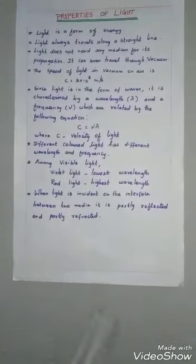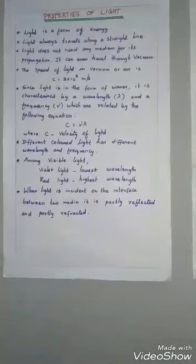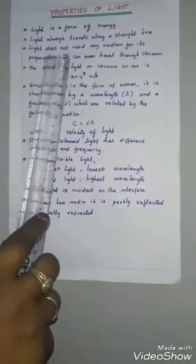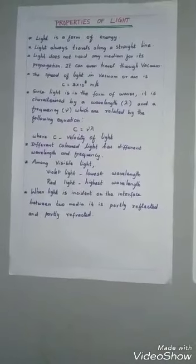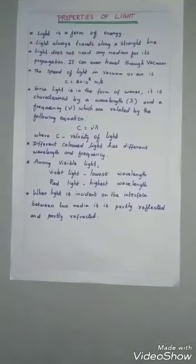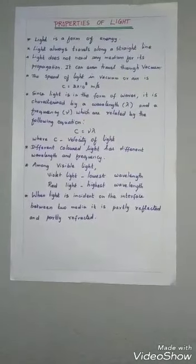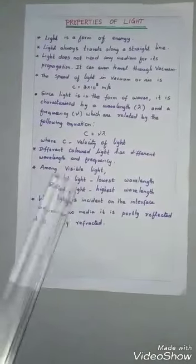From this we can understand light always travels in a straight line. Third property, light does not need any medium for its propagation. It can also travel through air or vacuum. The speed of light in air or vacuum is 3 into 10 power 8 meter per second.